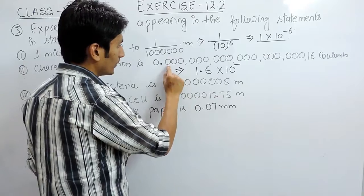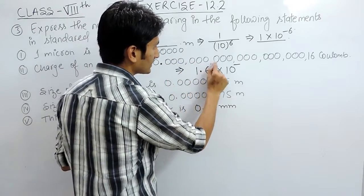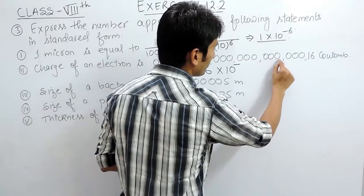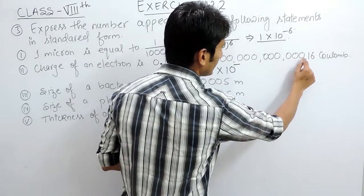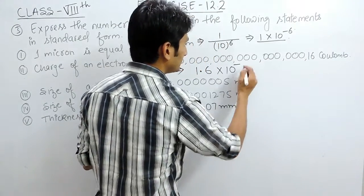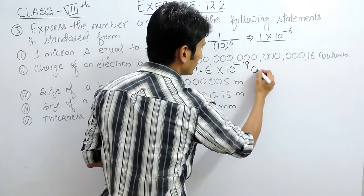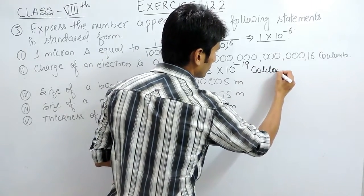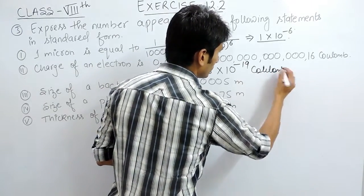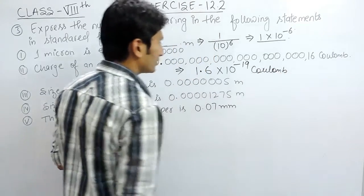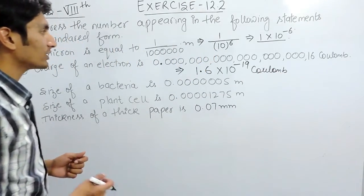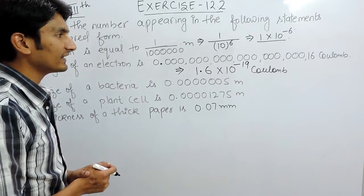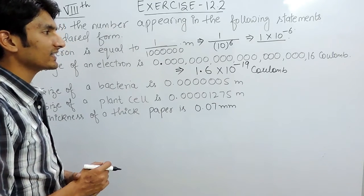Counting the digits shifted: 1, 2, 3, 4, 5, 6, 7, 8, 9, 10, 11, 12, 13, 14, 15, 16, 17, 18, and 19. So the charge on the electron is 1.6 multiplied by 10 raised to power minus 19 coulombs.